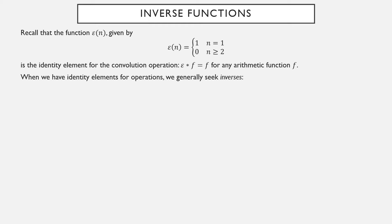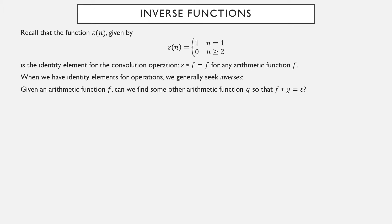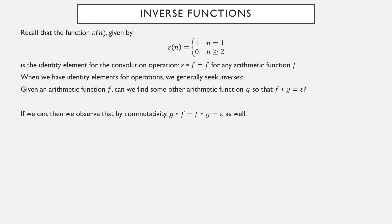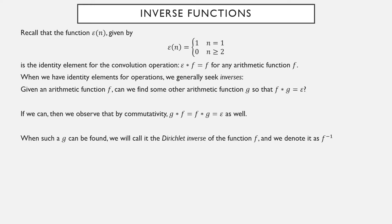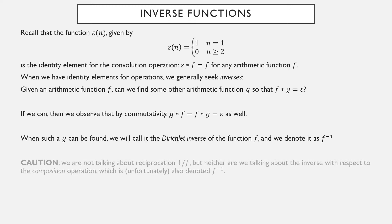When we have identity elements for operations, we generally want to be able to find inverses. Given an arithmetic function f, can we find another arithmetic function g so that the convolution is the identity element epsilon? If we can, then by commutativity, the convolution of g and f equals the convolution of f and g, which would also be epsilon. If such a g can be found, we call it the Dirichlet inverse of f and denote it as f inverse.